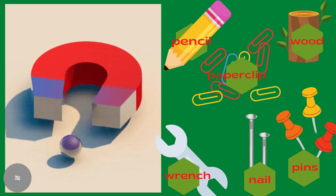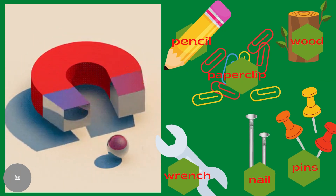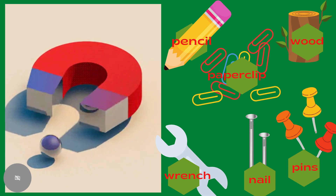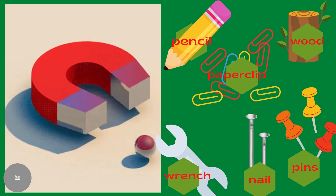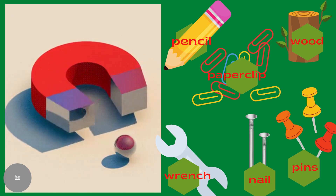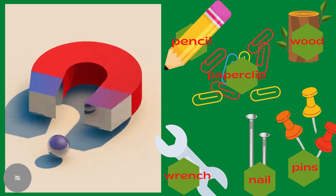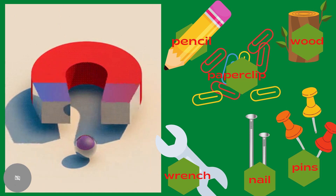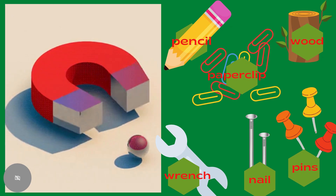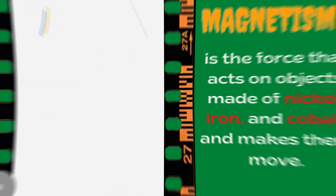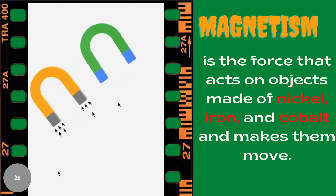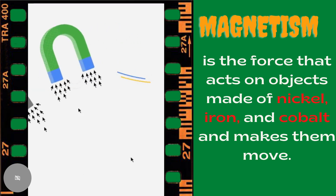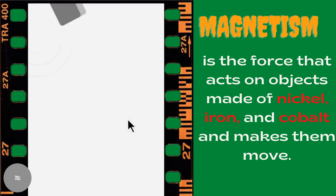Class, look at the pictures. Can you identify which of the materials get attracted to a magnet? Why do you think these materials get attracted to a magnet? What are they made of, and why are the other materials not attracted to a magnet? Magnetism is the force that acts on objects made of steel, iron, and cobalt, and makes them move.